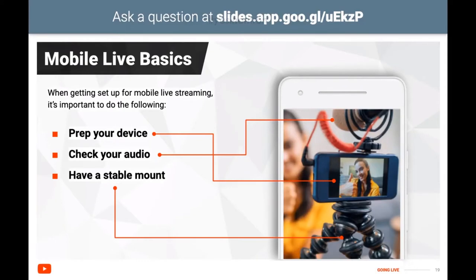When getting set up for mobile live streaming, it's important to prep your device. If you're not on Wi-Fi, keep in mind that certain areas have less mobile signal, so consider your location carefully. A good rule of thumb is 10 megabytes of data per one minute of stream. Enable Do Not Disturb to avoid interruptions from phone calls, or if on Wi-Fi, turn on airplane mode with Wi-Fi on. For battery, expect about 1% of phone battery per one minute of stream, so make sure your phone is charged. Also determine your desired orientation — horizontal or vertical — and lock your screen rotation to prevent auto-rotation mid-stream.